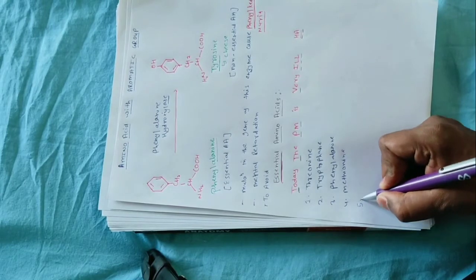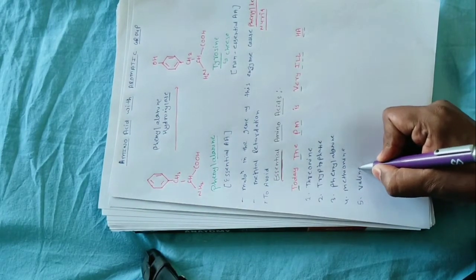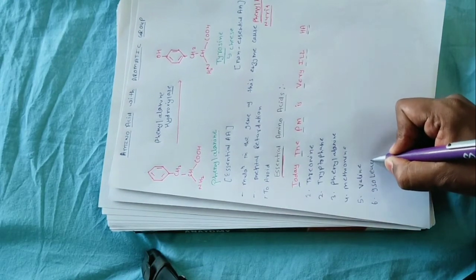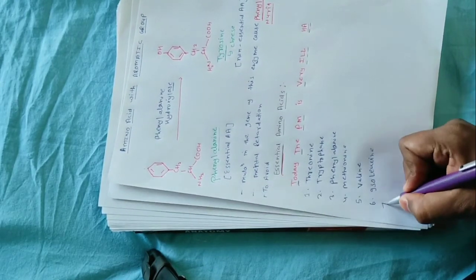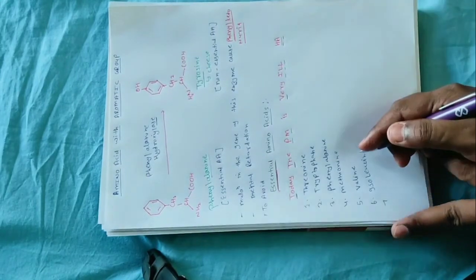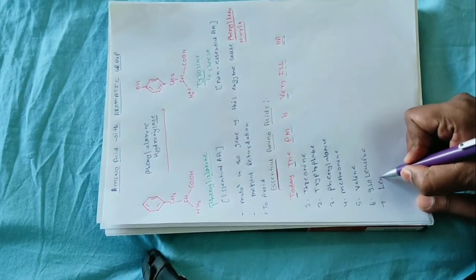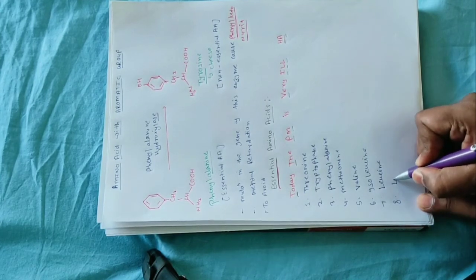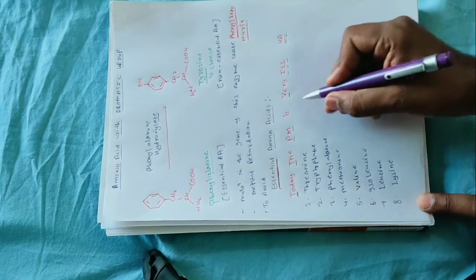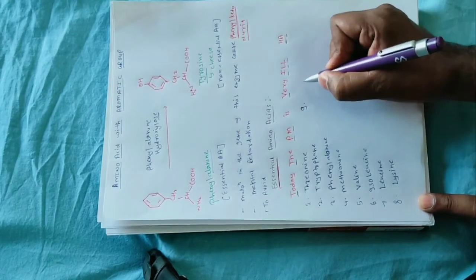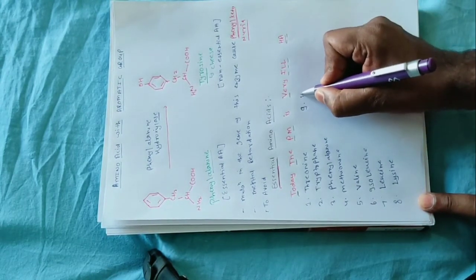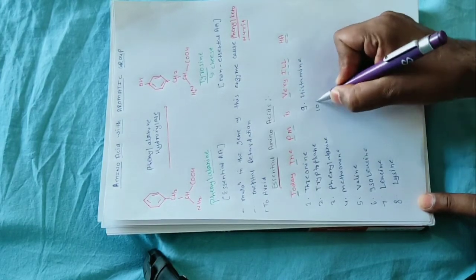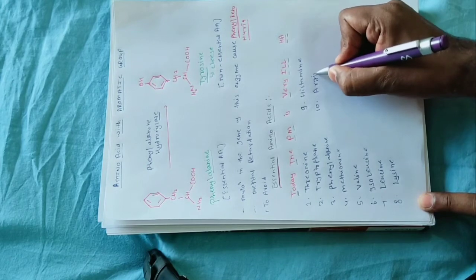5th amino acid है Valine। 6th amino acid है Isoleucine। 7th amino acid है Leucine। 8th amino acid है Lysine। 9th amino acid है Histidine। और 10th amino acid है Arginine।